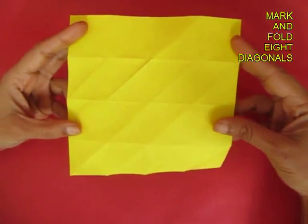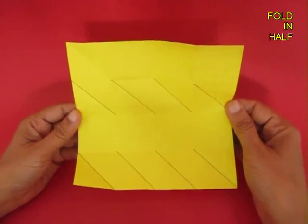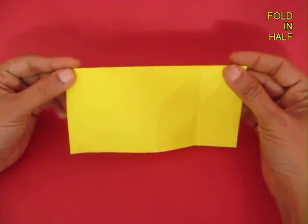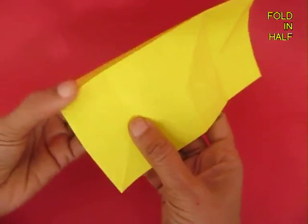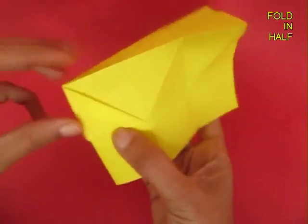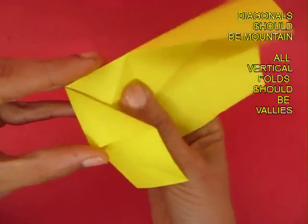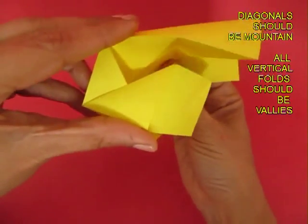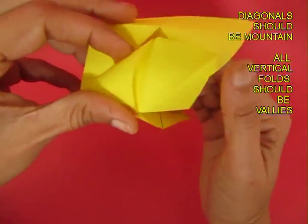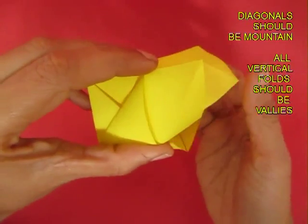This is the back view. You can see the folds very clearly. Now fold the model into half and remember that all the diagonals should be mountains and all the vertical folds should be valley folds.